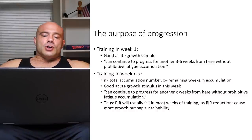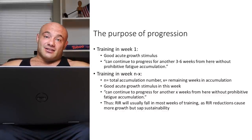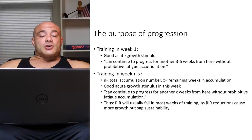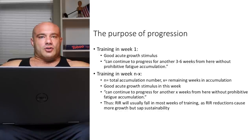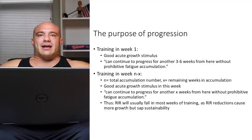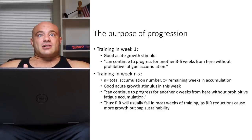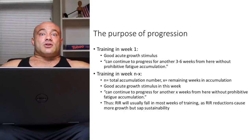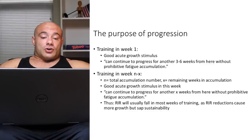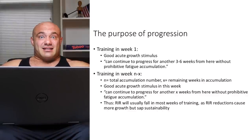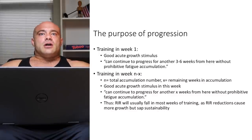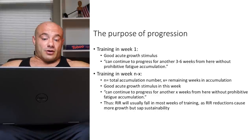Taking an algebraic approach: training in week one is good. What about training in week n minus x? N is the total number of weeks in accumulation — let's say eight — and x is the remaining weeks left in accumulation. So n minus x, like eight minus six, means we're at week two. Training in week two needs to give a good acute growth stimulus AND allow us to continue to progress for another x weeks — in that case, six weeks — without prohibitive fatigue accumulation. It doesn't make sense to go all out and have to deload all the time.